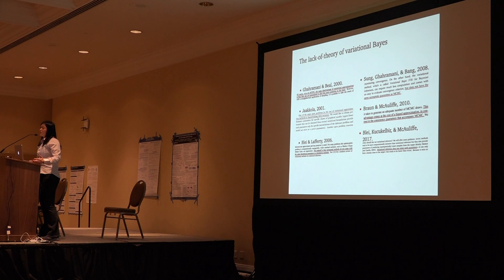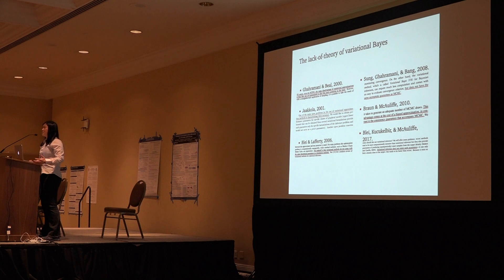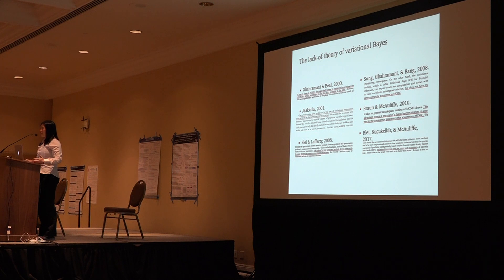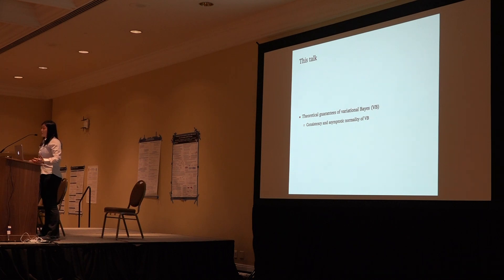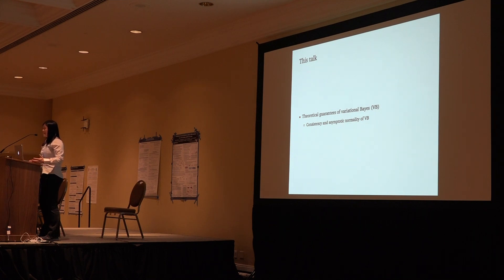However, there are few theoretical guarantees in the literature around variational Bayes. From 2000 up into 2017, many researchers have called out to this community that we need some theoretical characterization around variational Bayes. Today we come with work that tries to fill in some theory for variational Bayes, where we study the asymptotic properties of variational Bayes, establishing consistency and asymptotic normality.